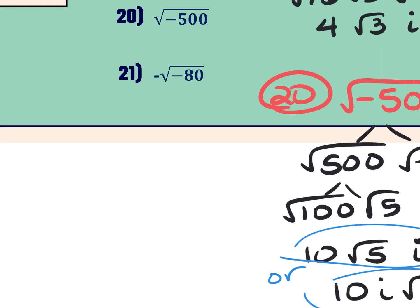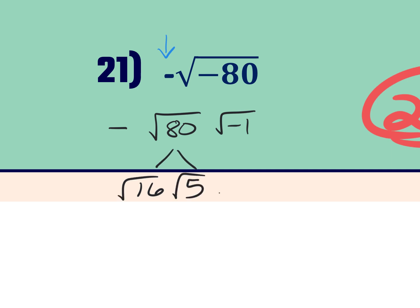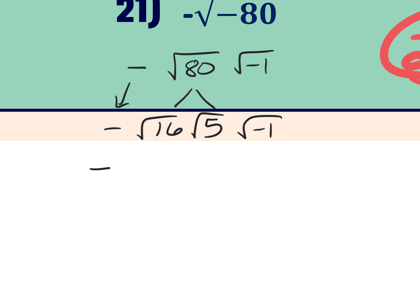For the negative square root of 80: notice there's a negative sign outside the radical. That negative sign outside is just going to make the final answer negative — it goes in front of the whole thing. I break down the 80 into negative 1 times 80, then factor as 16 times 5. Square root of 16 is 4, 5 stays underneath, square root of negative 1 is i. So the final answer is negative 4i square root 5.